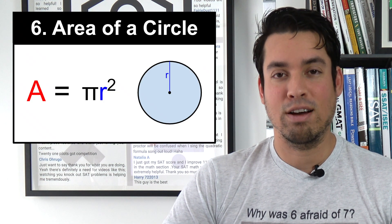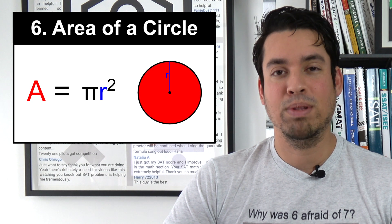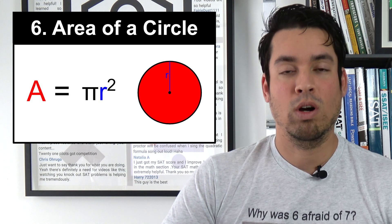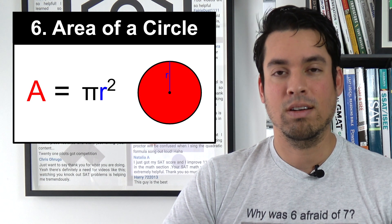Next on the list is area of a circle, and again area is simply πr², where r is the radius of a circle.